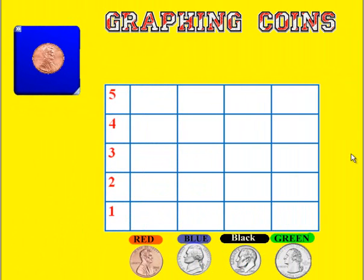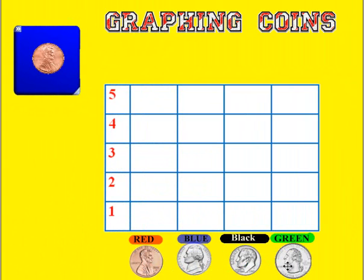In this video we are going to graph some coins. The penny will be red, the nickel will be blue, the dime will be black, and the quarter will be green.